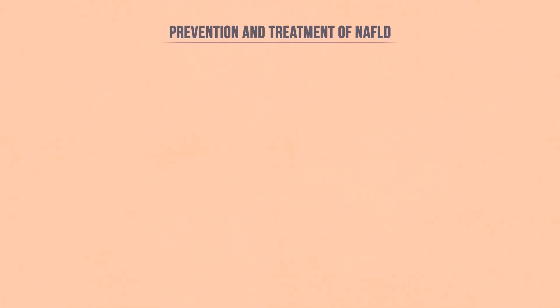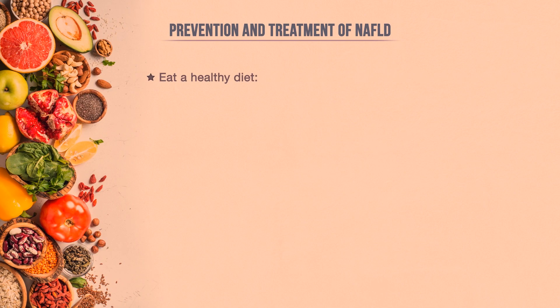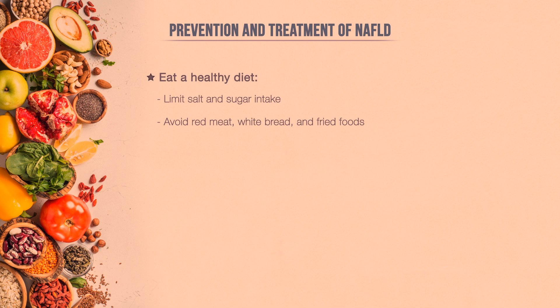There's currently no medical or drug treatment for NAFLD. However, there are some things that you can do to prevent the development of a fatty liver. You should eat a healthy diet, limit the amount of salt and sugar intake, avoid red meat, white bread, and fried foods, and add lots of fruits and leafy green vegetables to the menu. You should also include whole grains and nuts, which are high in fiber.